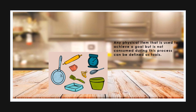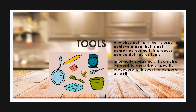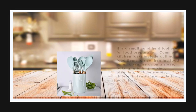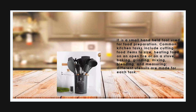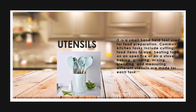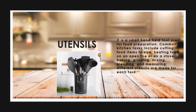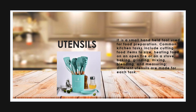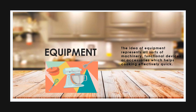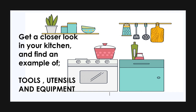Before we proceed, let me discuss the definition of tools, utensils, and equipment. Any physical item that is used to achieve a goal but is not consumed during this process can be defined as tools. A small hand-held tool used for food preparation is called a utensil. Common kitchen tasks include cutting food items into size, heating food on an open fire or on a stove, baking, grinding, mixing, blending, and measuring — different utensils are made for each task. The idea of equipment refers to all sorts of machinery, functional devices, or accessories which help make cooking effective.